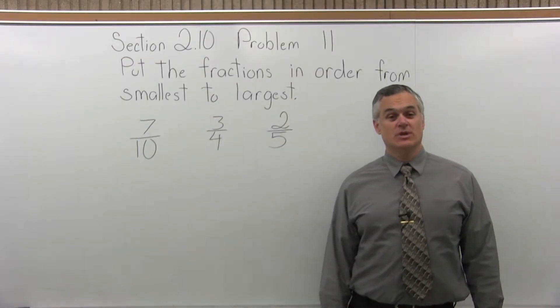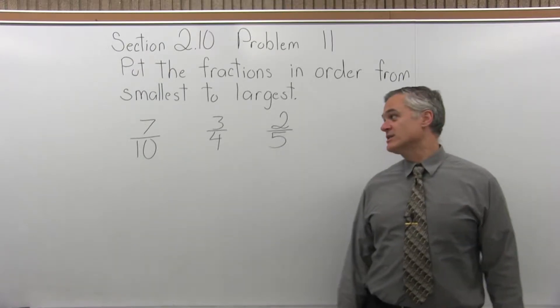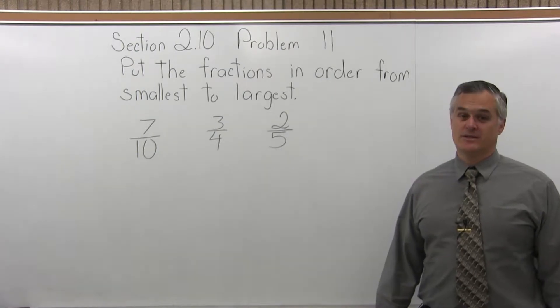This is Section 2.10, Problem 11. It says put the fractions in order from smallest to largest, and we have 7 tenths, 3 fourths, and 2 fifths.